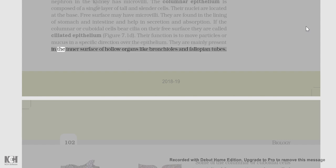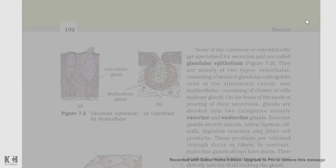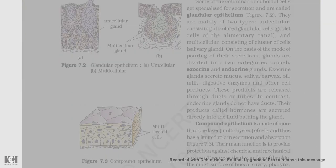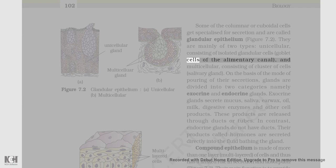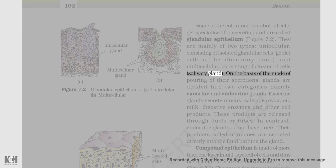Ciliated epithelium is mainly present in the inner surface of hollow organs like bronchioles and fallopian tubes. Some of the columnar or cuboidal cells get specialized for secretion and are called glandular epithelium (figure 7.2). They are mainly of two types: unicellular, consisting of isolated glandular cells such as goblet cells of the alimentary canal, and multicellular, consisting of a cluster of cells, such as the salivary gland.